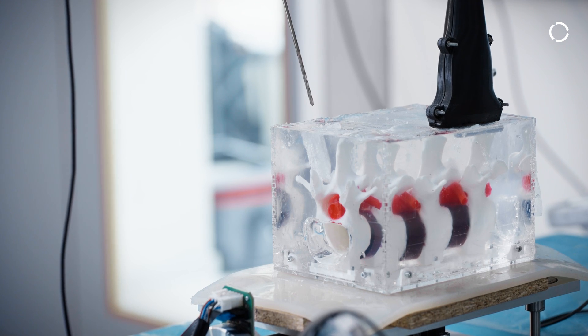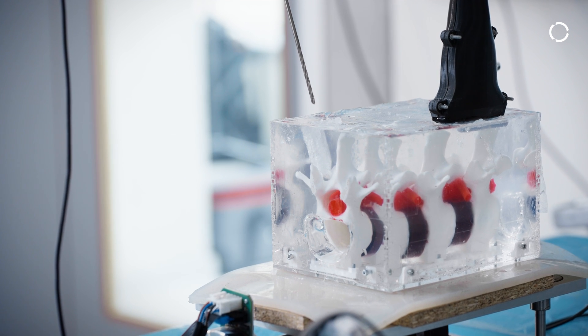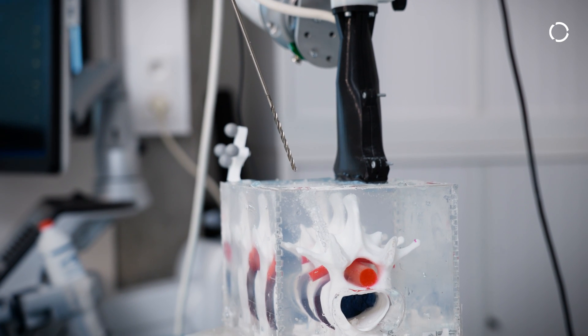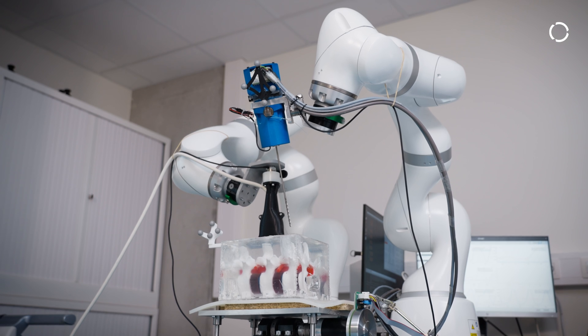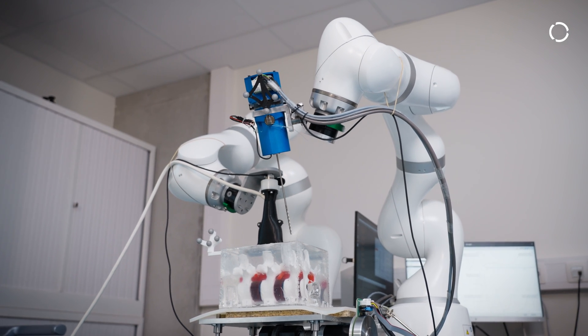We need to drill very precisely. We typically have one millimeter of margin. So if you are drilling on a vertebra and the vertebra is moving one millimeter, you can imagine it's a little bit of a gamble. So by measuring this on the spot, our system is super reactive. It can be faster than the human.